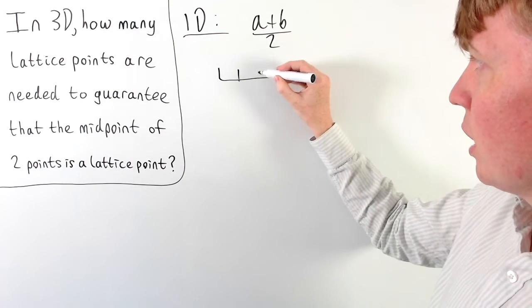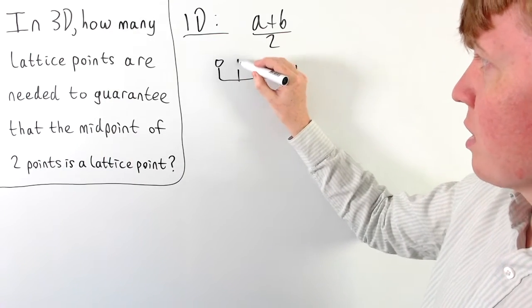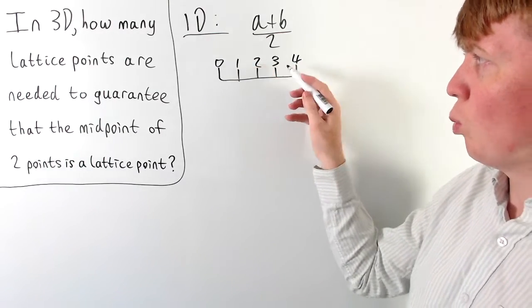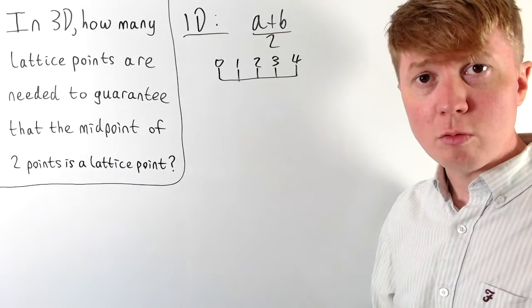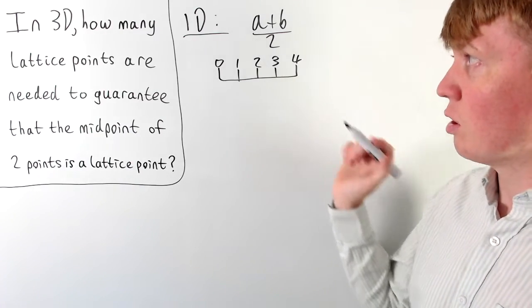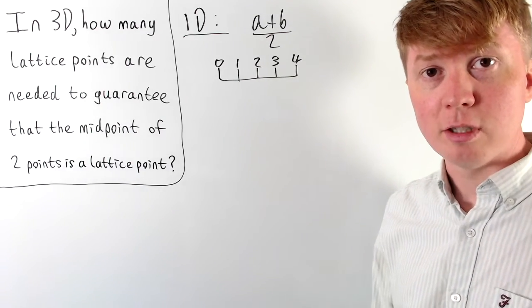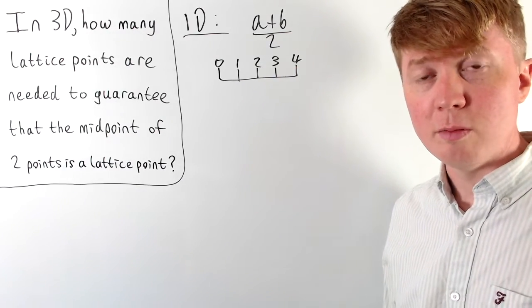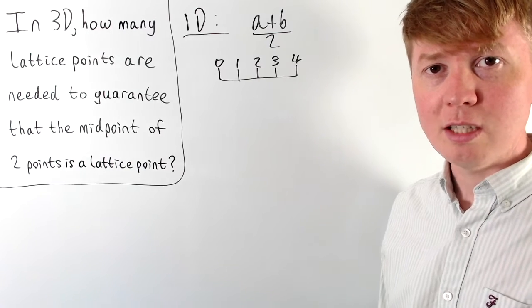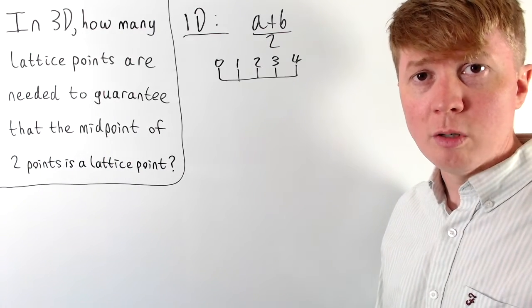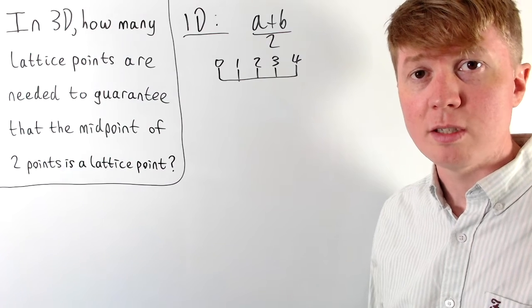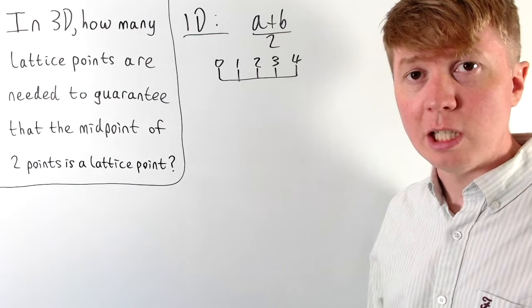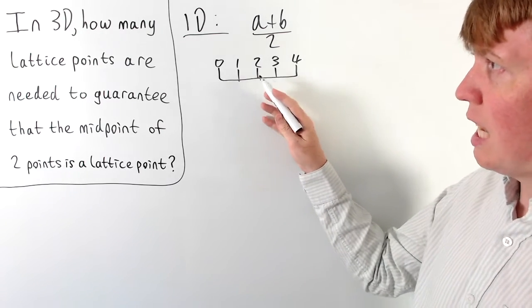If we draw a number line, we could have for example 0 and 2 — the midpoint between those would work — or 0 and 4, or 1 and 3. We start to realize it's just to do with the parity of our integers: if both are even then their sum divided by 2 is going to be an integer, or if both are odd then the sum divided by 2 is also an integer. So having two odd numbers or two even numbers guarantees their midpoint is going to be a lattice point.